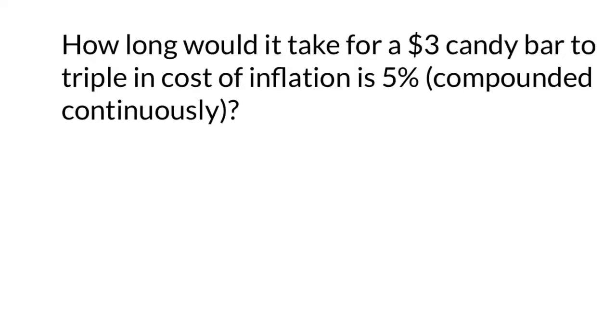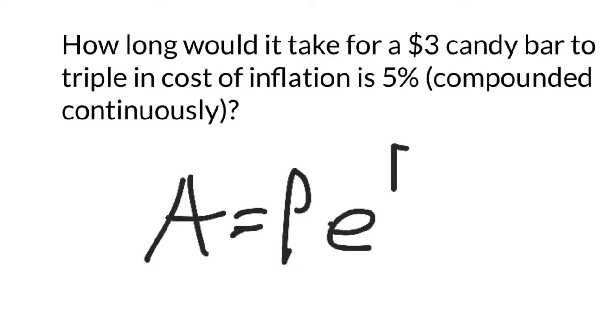The compound continuous formula looks like this. You have an amount based on a principal investment times e, which is 2.7 something. It's a constant like pi, not a variable. Times e to the r percentage of your interest times t, the number of years that you're doing it.